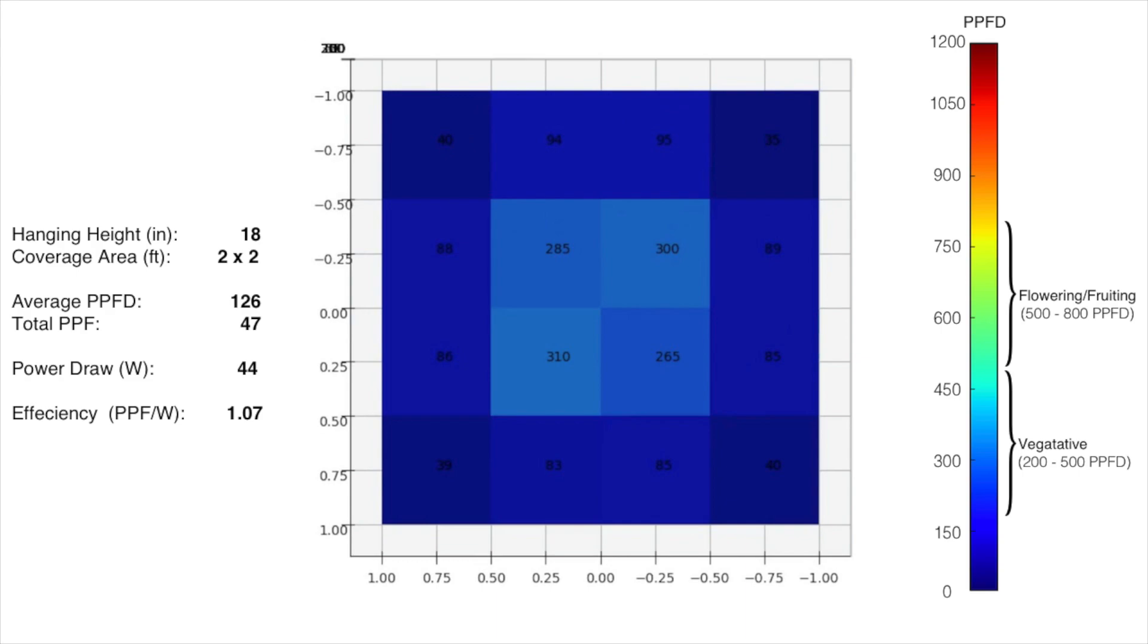My power draw of 44 watts gives me an efficiency of 1.07, which is all things considered pretty inefficient. But you don't get this light for the efficiency. The super high efficiency grow lights you can buy nowadays are 2 and sometimes even 2.5. But those are more expensive and more painful to set up.